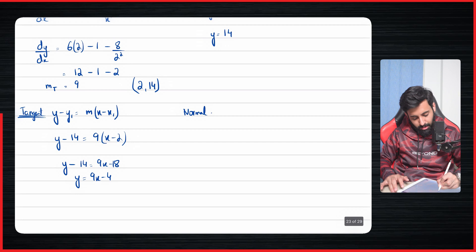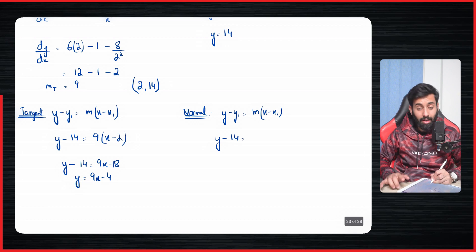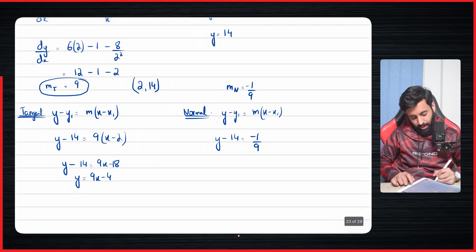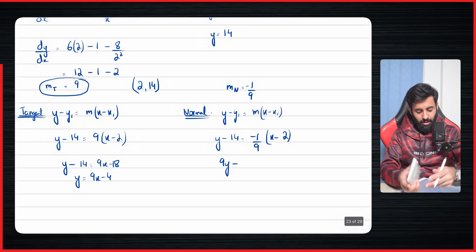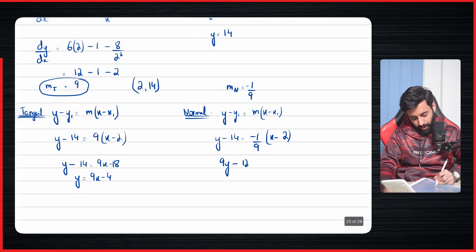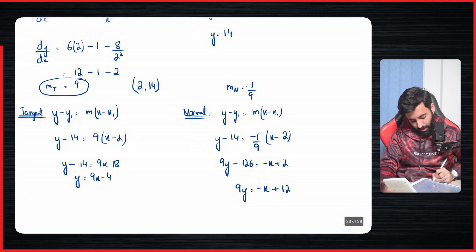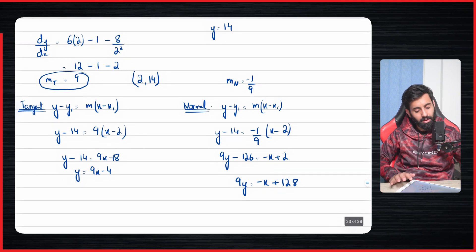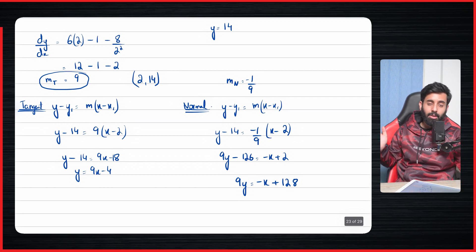For the normal, we use the same method y − y1 = m(x − x1), but the gradient is now the negative reciprocal of 9, which is −1/9. So: y − 14 = −1/9 · (x − 2). Multiplying through by 9: 9y − 126 = −x + 2, giving 9y = −x + 128. That is the equation of the normal.